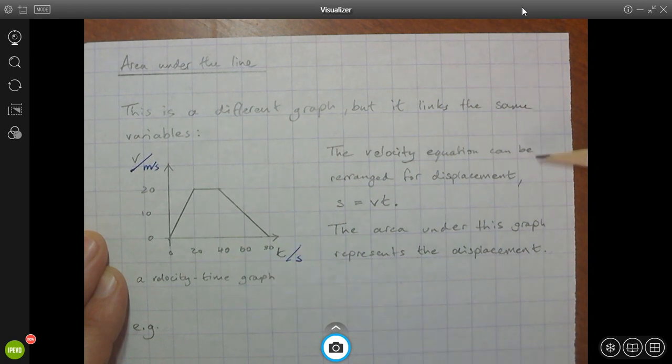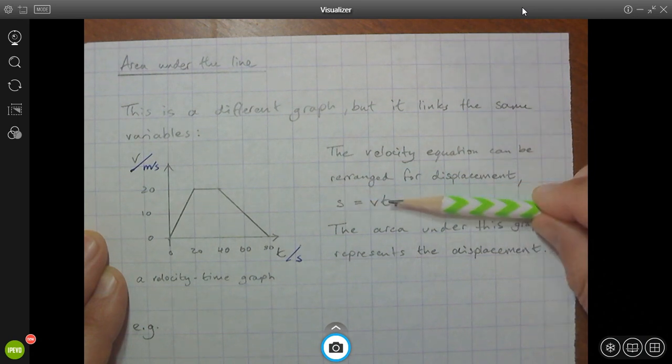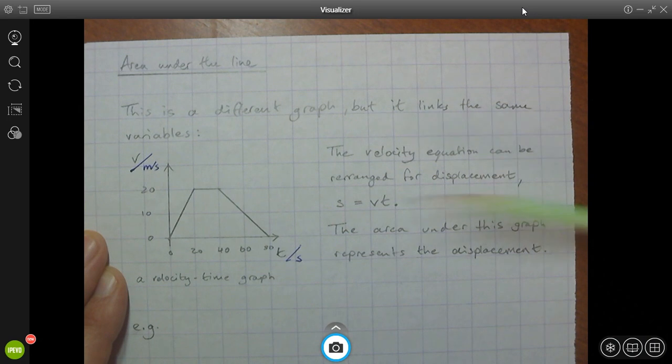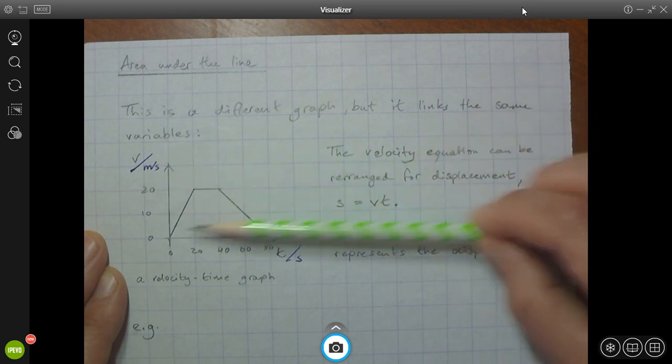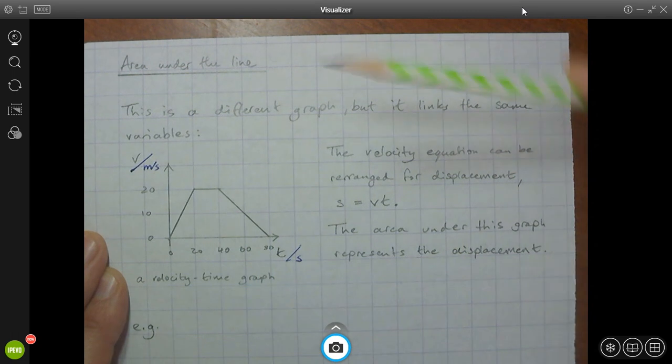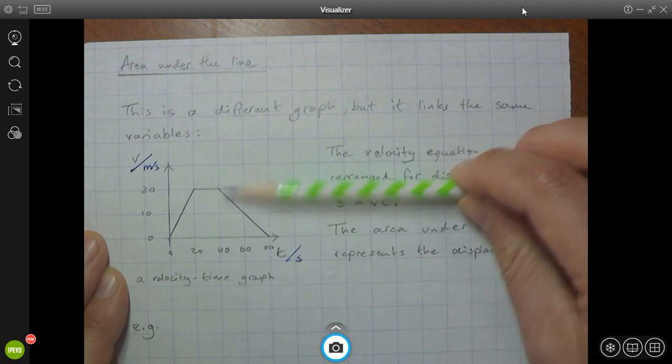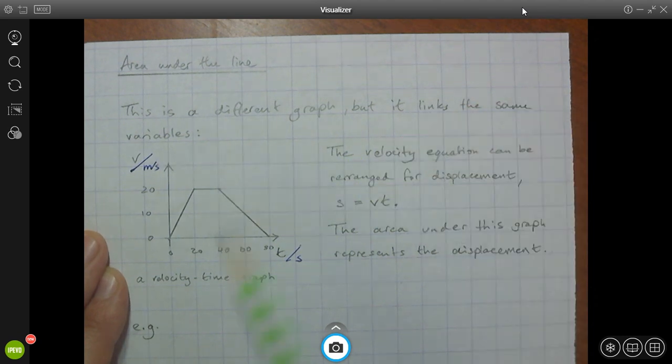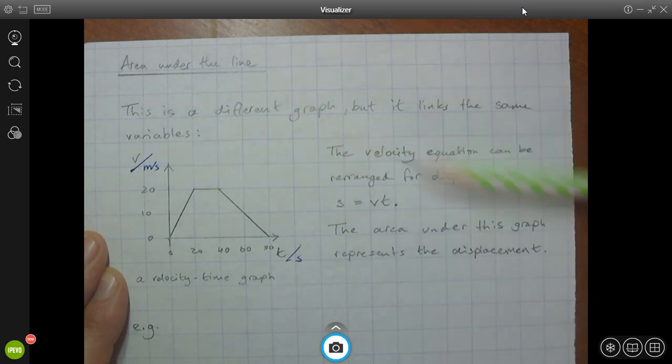So what can we get from the area under this graph? Well, here's the relationship between these variables. If we rearrange the equation for velocity for displacement, we've got displacement as a subject. We've got displacement equals velocity times time. If we find the area under this line, we are multiplying the changing velocity by the changing time. So the area is not going to be meters squared or centimeters squared because the variables we are multiplying are not distance. They are velocity and time.